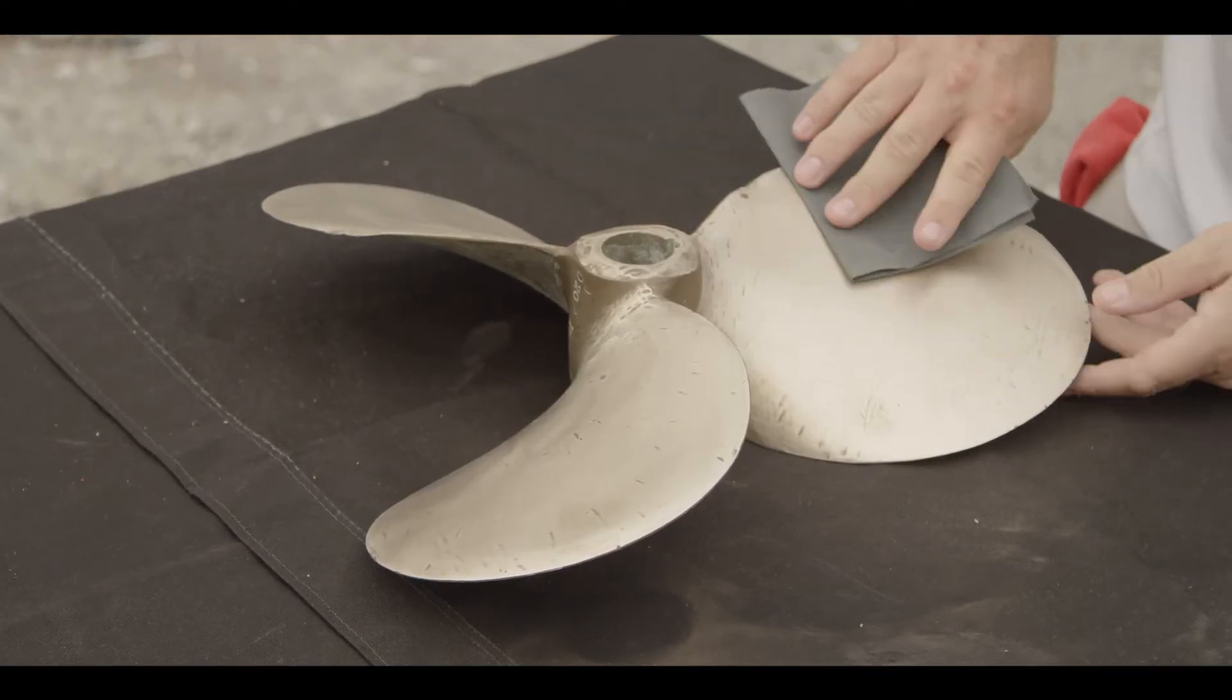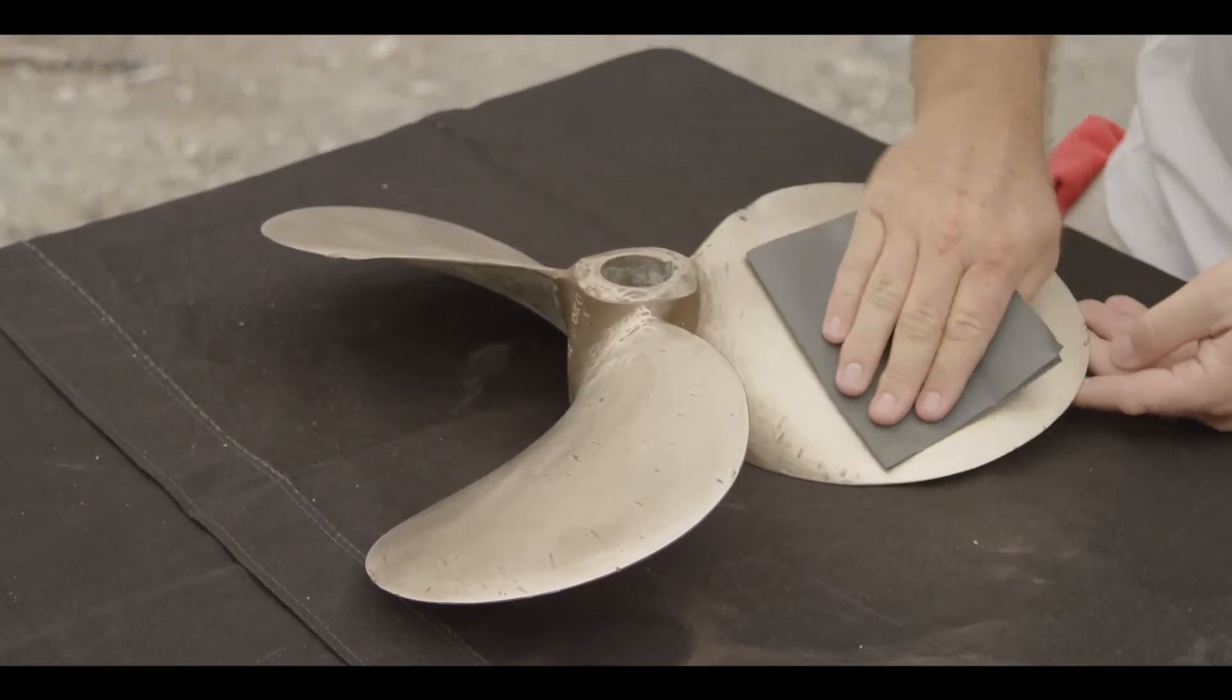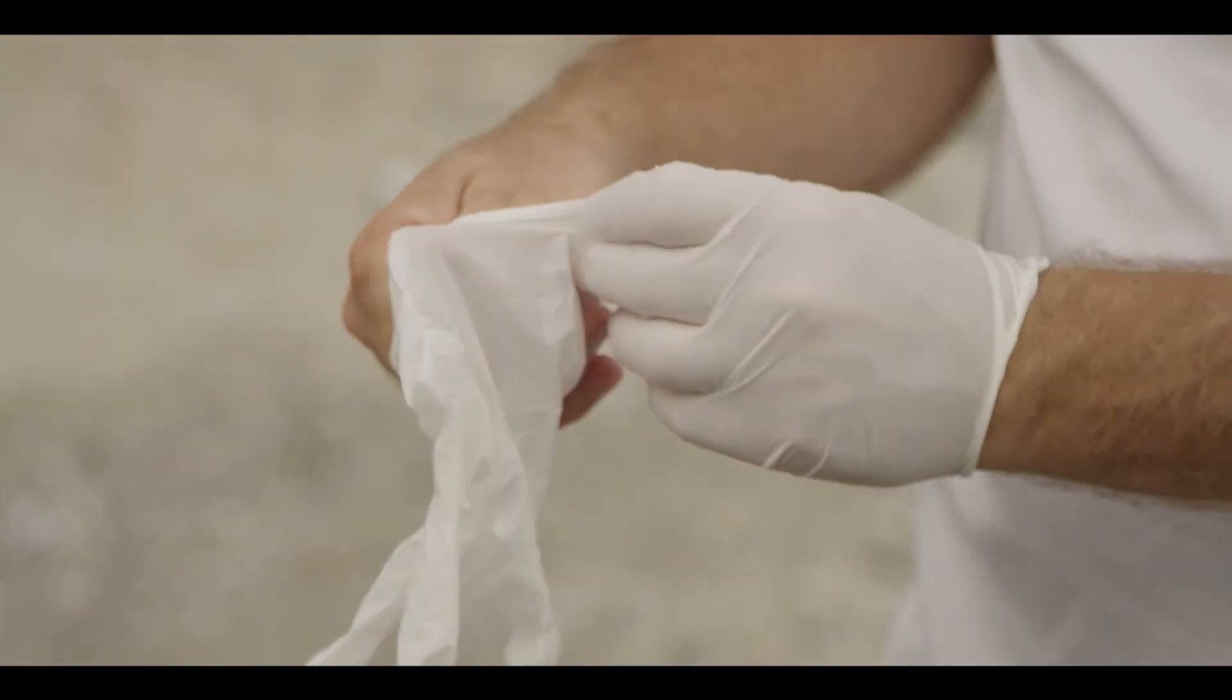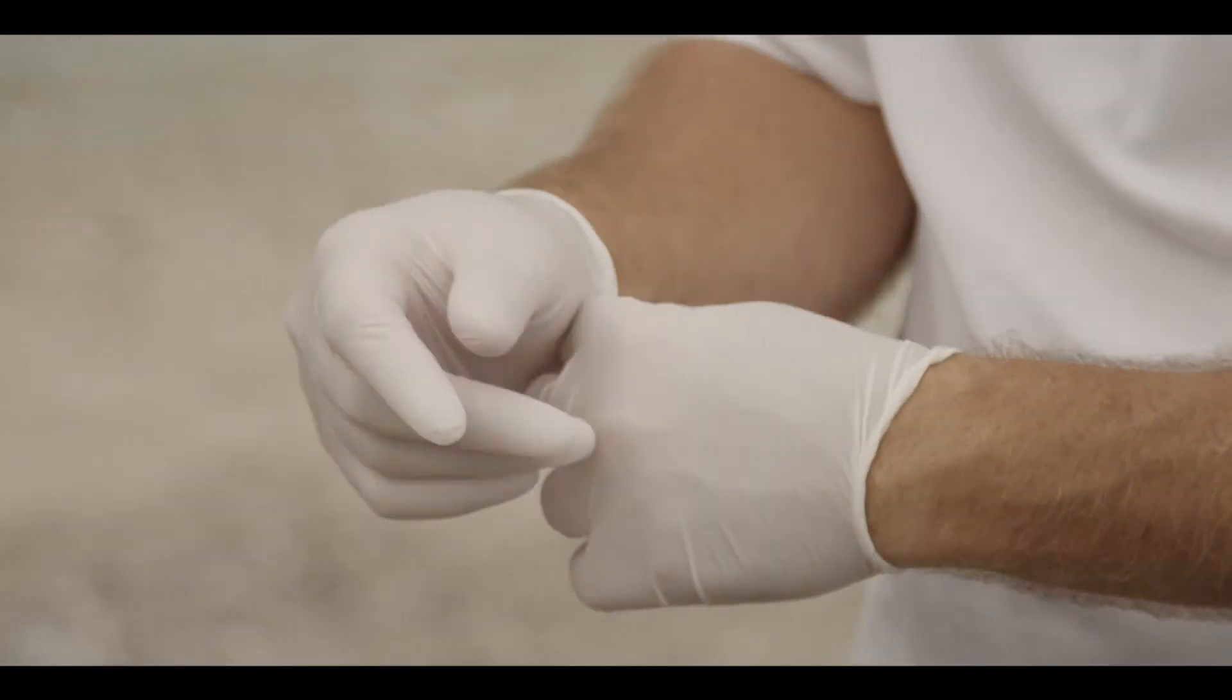Then, use 1000 grit sandpaper to polish the entire surface area to be coated. Once those steps have been completed, it is recommended to wear the protective gloves provided in the kit before proceeding.